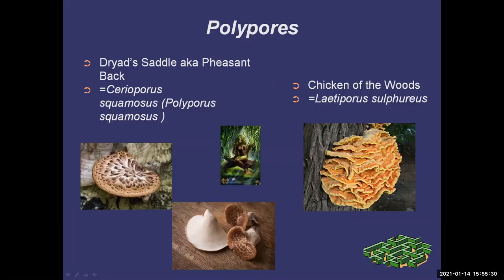Now I'm going to talk about a couple of edible polypores. These are nice ones because they're what I call beginner mushrooms — very easy to identify with no poisonous look-alikes. The first one is dryad's saddle, or pheasant back. It's called dryad's saddle because a dryad — a little fairy — was imagined sitting on this saddle-like mushroom surveying the world. It's called a pheasant back because the markings are like feathers.